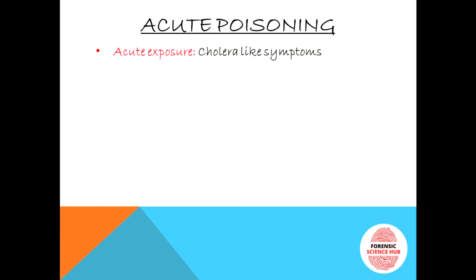Poisoning is of two types: acute and chronic. Acute means a large amount of the poison or irritant is taken at the same time, causing a series of problems. In chronic poisoning, small amounts are taken over a very long time.